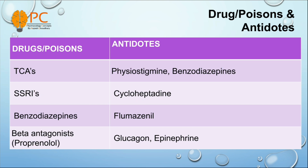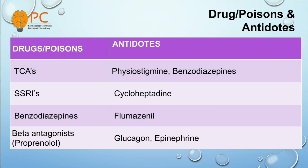Next is TCAs, means tricyclic antidepressants. For TCAs overdose, we can use physostigmine or benzodiazepines as antidote. Physostigmine is preferred. And for SSRIs overdose, means fluoxetine, means selective serotonin reuptake inhibitors, we can use cyproheptadine as antidote.